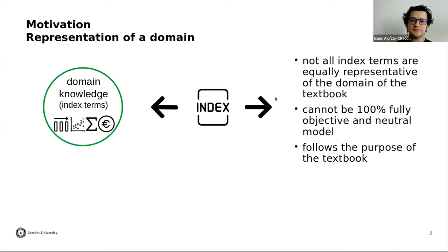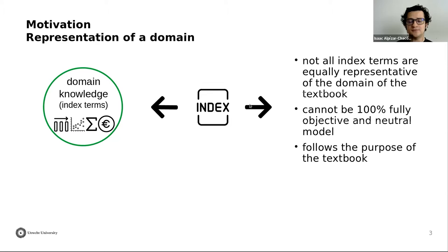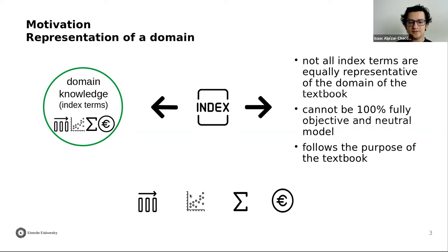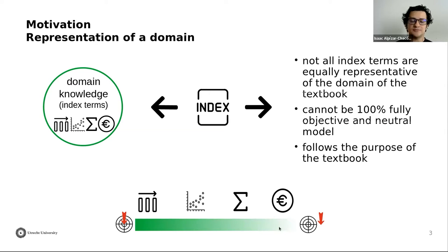We have noticed that not all index terms are equally representative of the domain of the textbook. An index cannot be a fully objective and neutral model because it is also a representation of the author's thoughts. But we know that the index section follows the purpose of a textbook, which is to introduce a domain. So if we have a series of index terms — for example, mean, scatterplot, summation — some will be very relevant for the domain and some will be irrelevant. We can create a scale of relevance and place all these index terms on it.